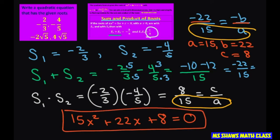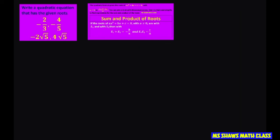Now let's do the second problem. Our first solution is negative 2 square root of 5. And our second solution is 4 square root of 5.